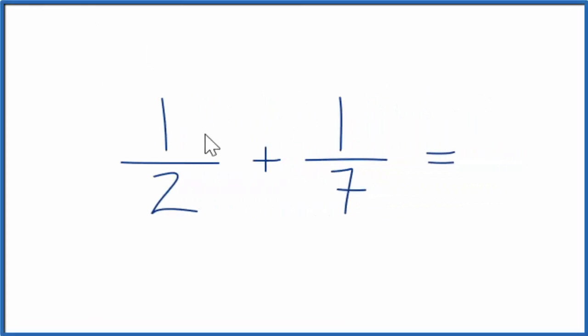Let's add the fractions one-half plus one-seventh, and then I'll show you a quick way to check your work. So first off, we need to get a common denominator. The numbers down here are the denominator, and we need to get them to be the same.